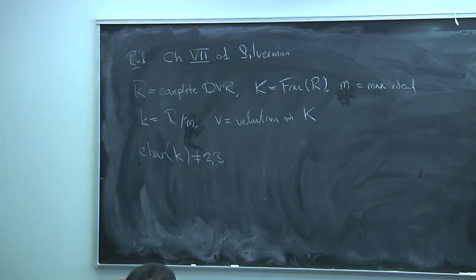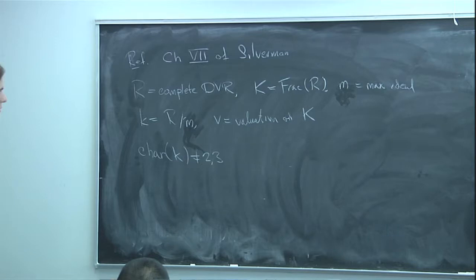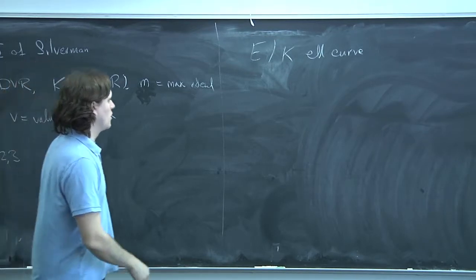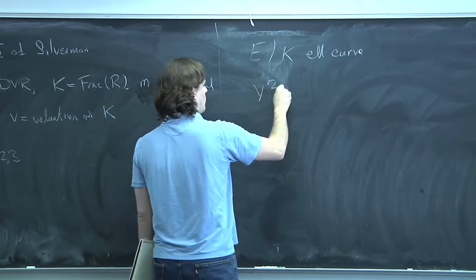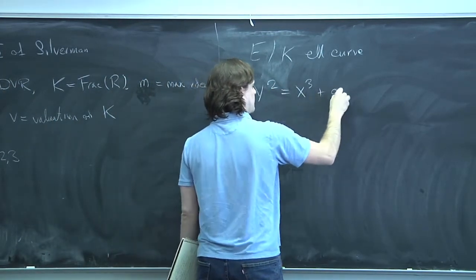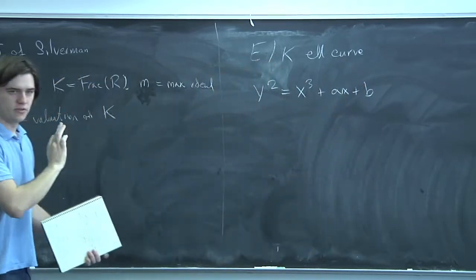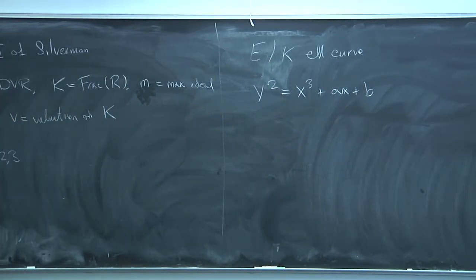That lets us put our Weierstrass equations in a very particular form that we're used to dealing with explicitly. So suppose we have an elliptic curve over K. We can write this curve in the form y² = x³ + ax + b. This is one place where I'm using the assumption that the characteristic is not 2 or 3. This form of the equation is not unique.